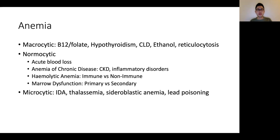For normocytic anemia, it is first important to exclude acute blood loss. Then the three groups of common causes are anemia of chronic disease, hemolytic anemia — which can be broken down into immune or non-immune mediated — as well as marrow dysfunction that can be primary hematological problems or secondary issues. In terms of the microcytic group, iron deficiency anemia is most common, followed by thalassemia, and sideroblastic anemia and lead poisoning should be considered as well.